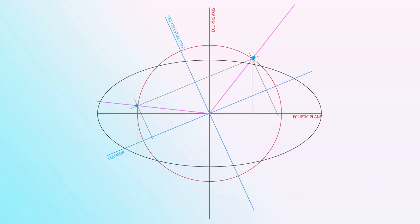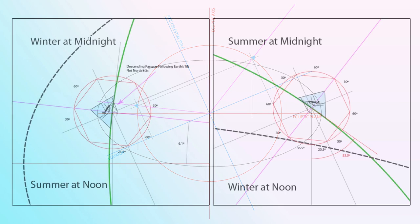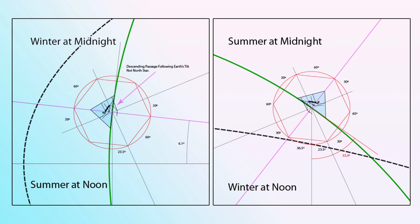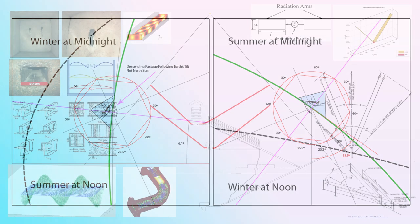Here I want to show the relationship between the Great Pyramid and the Earth — how it's situated relative to the celestial poles, the ecliptic poles, and the galaxy. The pyramid is almost perfectly situated under the galaxy during the winter at midnight or the summer at noon. This galactic alignment at certain times of year is really important for what we'll talk about later.